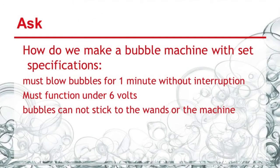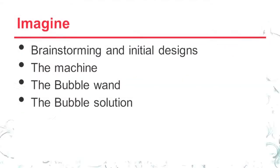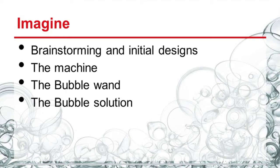The first part of the engineering design cycle starts with assessing the qualifications of the assignment. For our assignment, our bubble machine must blow bubbles for at least one minute without interruption, the source of power must be under six volts, and bubbles cannot stick to the machine. After understanding our limitations, we began brainstorming the initial design of the machine — how we would come up with bubble wands and how to create a bubble solution.